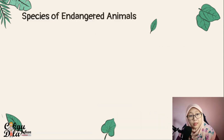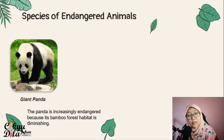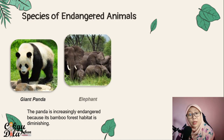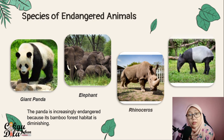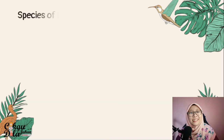Other species of endangered animals include the giant panda, which is increasingly endangered because its bamboo forest habitat is diminishing — we are destroying their habitat. We also have the elephant, rhinoceros, and tapir. Like the panda in China, we have the tapir here in Malaysia.